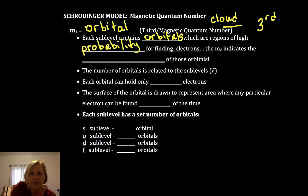The M sub L indicates the orientation of these. And we're finally talking about the wave function squared - that region in space where there's a 90% probability of finding an electron with a given energy. Something we've been building up to.